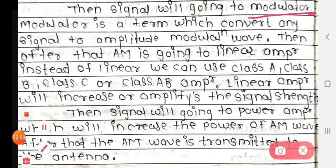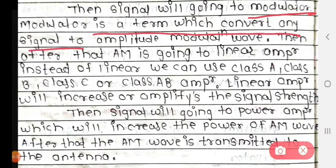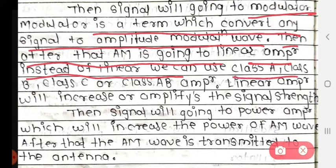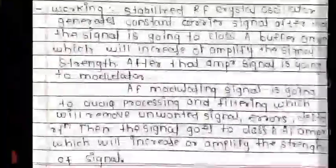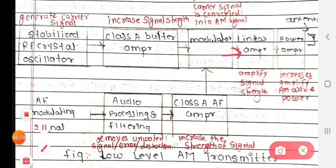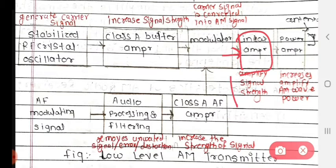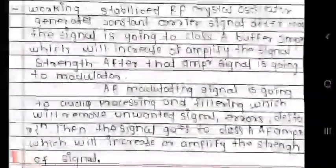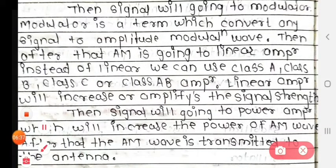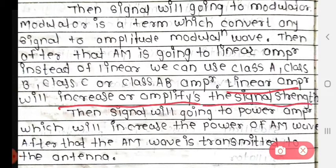After that, the amplitude modulated signal goes to the linear amplifier. Instead of a linear amplifier, we can use a class A, class B, class C, or class AB amplifier. The linear amplifier will increase or amplify the signal strength.